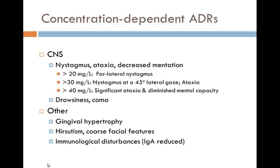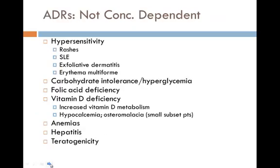Gingival hypertrophy is also a concentration-dependent adverse reaction, so you can try to minimize it by keeping the concentration as low as possible while maintaining seizure control. Hirsuitism and coarse facial features can also occur at high levels, as well as immunological disturbances such as decreased IgA. Non-concentration-dependent reactions are more allergic in nature: hypersensitivity rashes, SLE, exfoliative dermatitis, erythema multiforme, carbohydrate intolerance, hyperglycemia, folic acid and vitamin D deficiencies, anemias, hepatitis, and teratogenicity. These cannot be controlled by adjusting the dose.